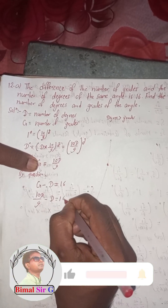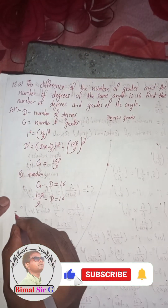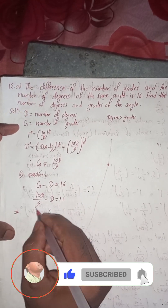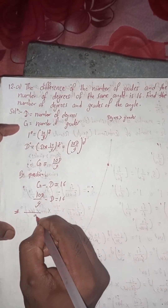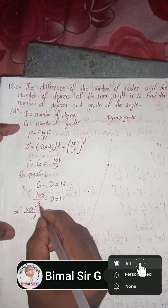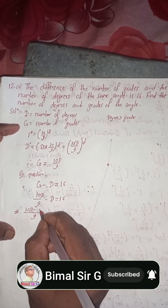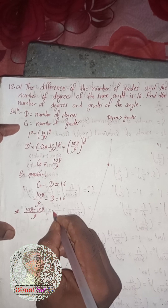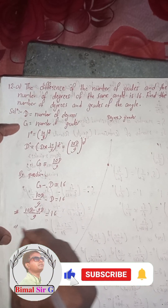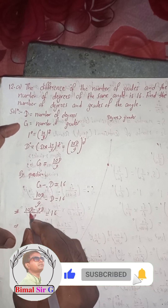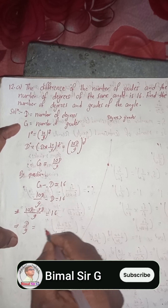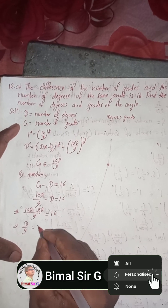In place of G we write 10D by 9. So this gives us 10D minus D into 9 divided by 9 equals 16, which simplifies to 10D minus 9D by 9 equals 16, giving D by 9 equals 16.